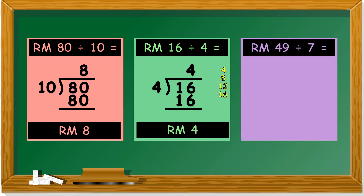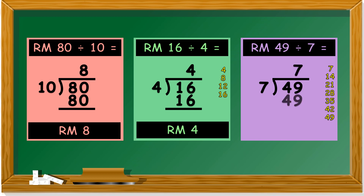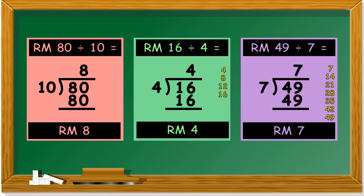Next, 49 ringgit divided by 7. The division form: 49 divided by 7. Multiplication of 7 is also to the tune of 'Are You Sleeping?' So it's 7, 14, 21, 28, 35, 42, 49. We got up until 49, so we stop here. How many fingers are open? 7. So 49 ringgit divided by 7 is 7 ringgit.